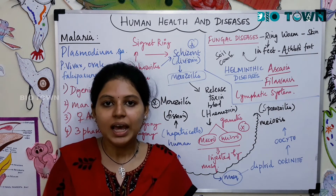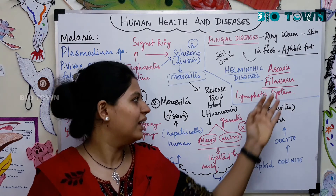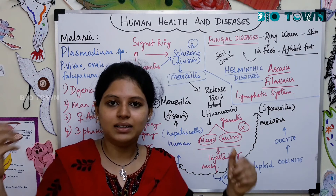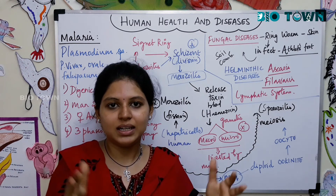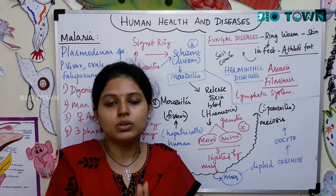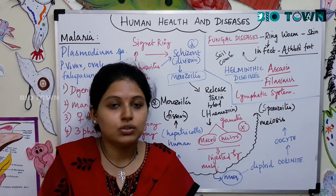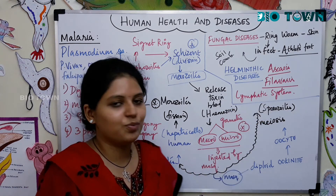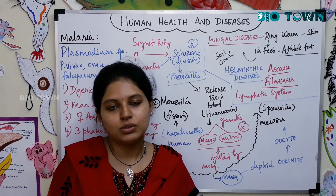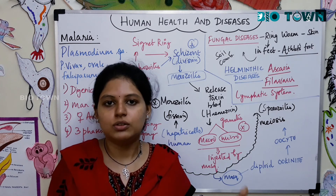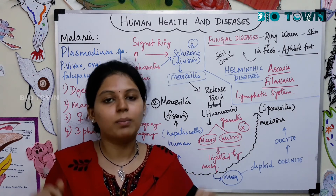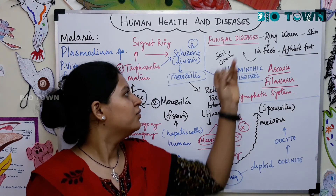Filariasis is caused by Wuchereria bancrofti. It is more severe than Ascaris because they are large, dimorphic worms that affect the lymphatic system — blocking blood circulation and causing organs to become enlarged, such as scrotal sacs and mammary glands. This is called lymphatic filariasis. This infection is also present in the soil, so you should never walk with bare feet to avoid helminthic worm infections.